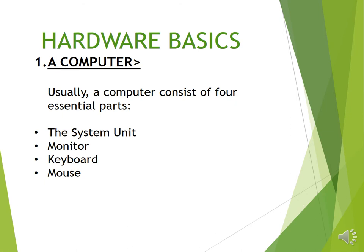The topic is Hardware Basics. As you know, a computer is made up of two broad categories: number 1, hardware, and number 2, software. Usually a computer consists of four essential hardware parts: the system unit, monitor, keyboard, and mouse.